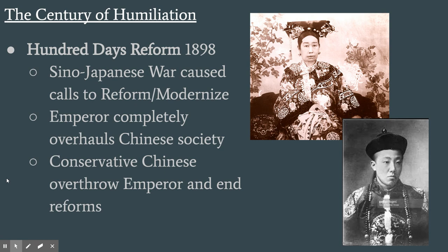This led to the next stage of reform: the Hundred Days Reform. Since the Self-Strengthening Movement hadn't fully modernized China, this was going to be shock modernization — doing it as fast as possible. The emperor completely overhauled Chinese society, focusing less on military and industrialization and more on reforming the education system to modernize China from within. This angered conservative, traditional Chinese, who then overthrew the emperor and completely ended the reforms. The overthrow was actually led by his own mother, who was very traditional and wanted to keep China traditional.